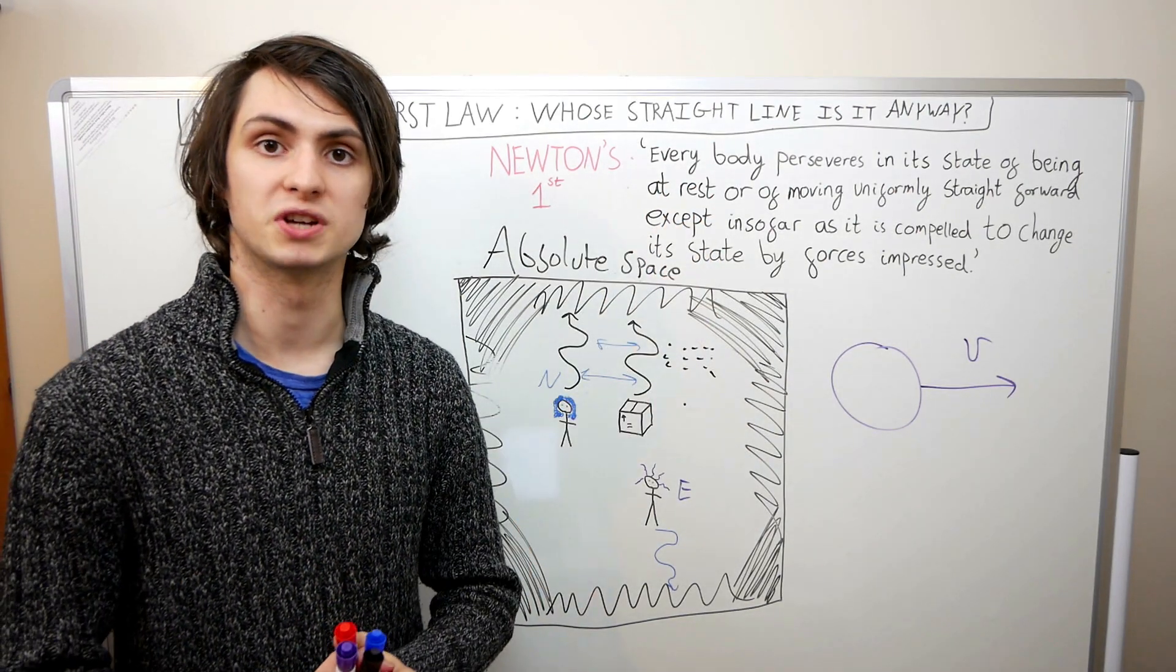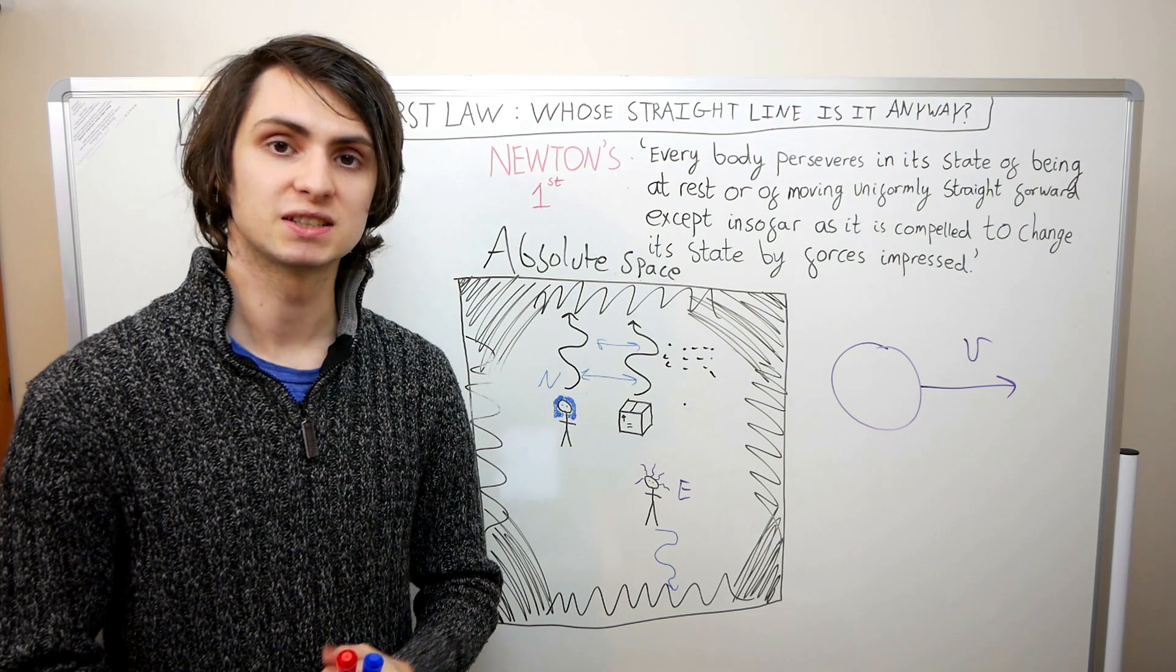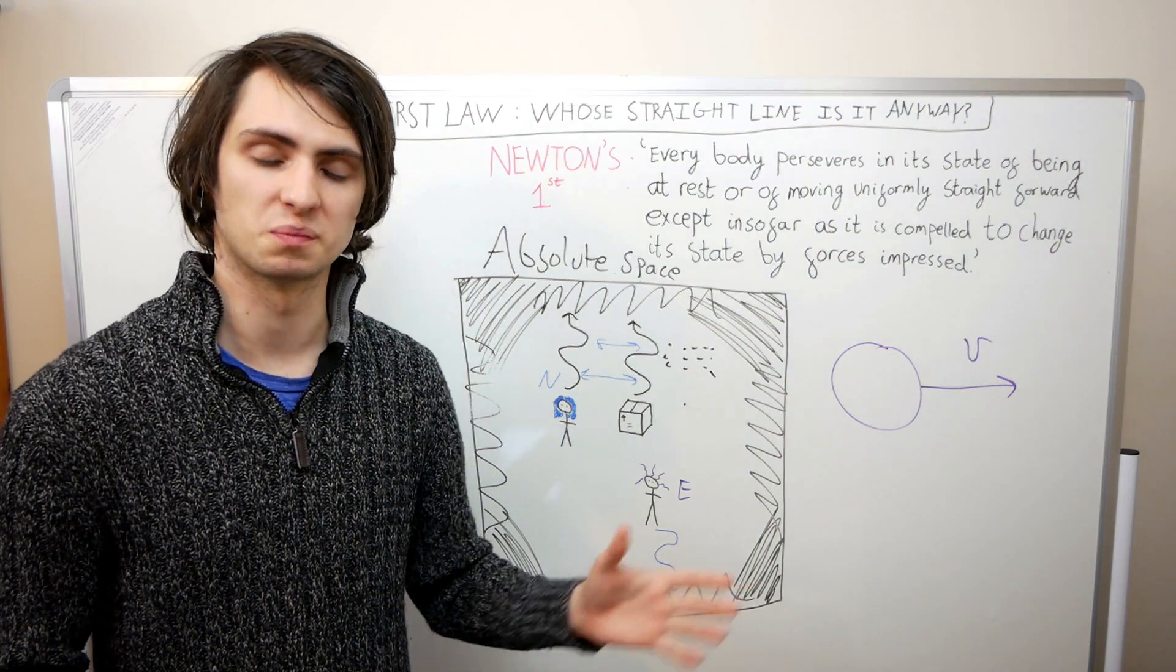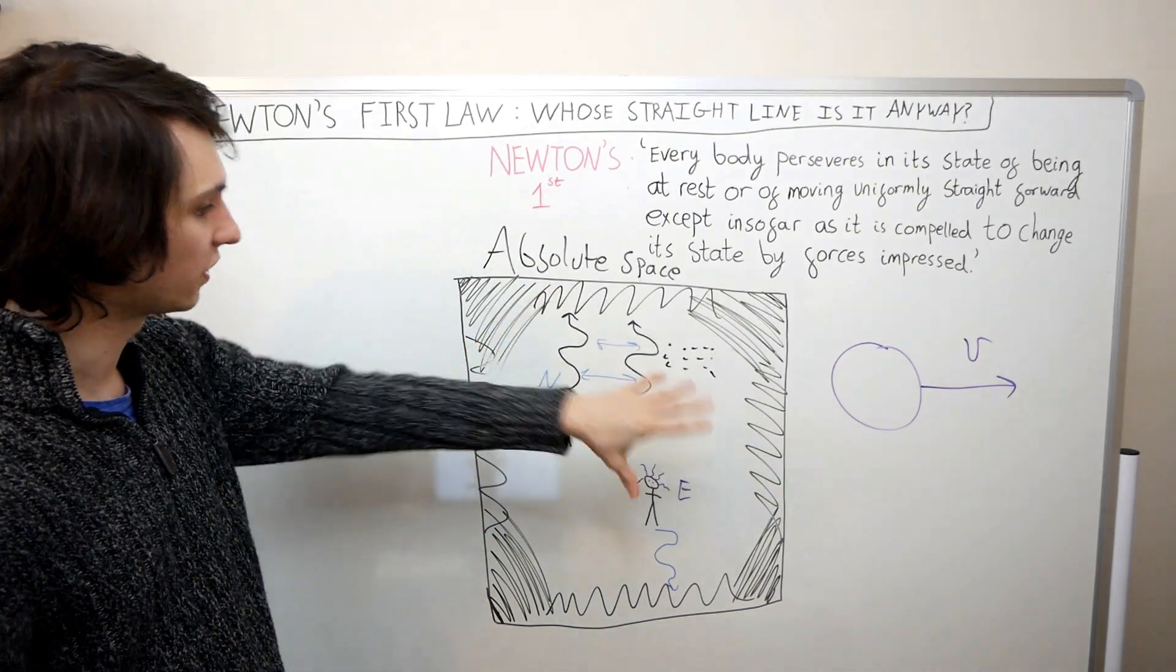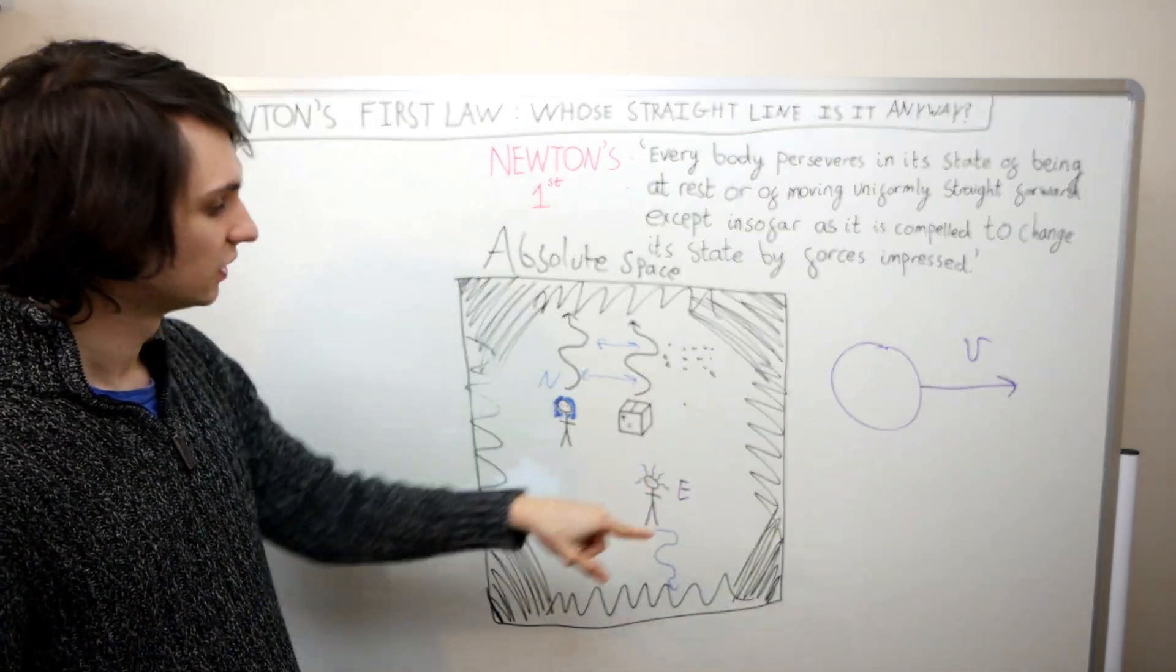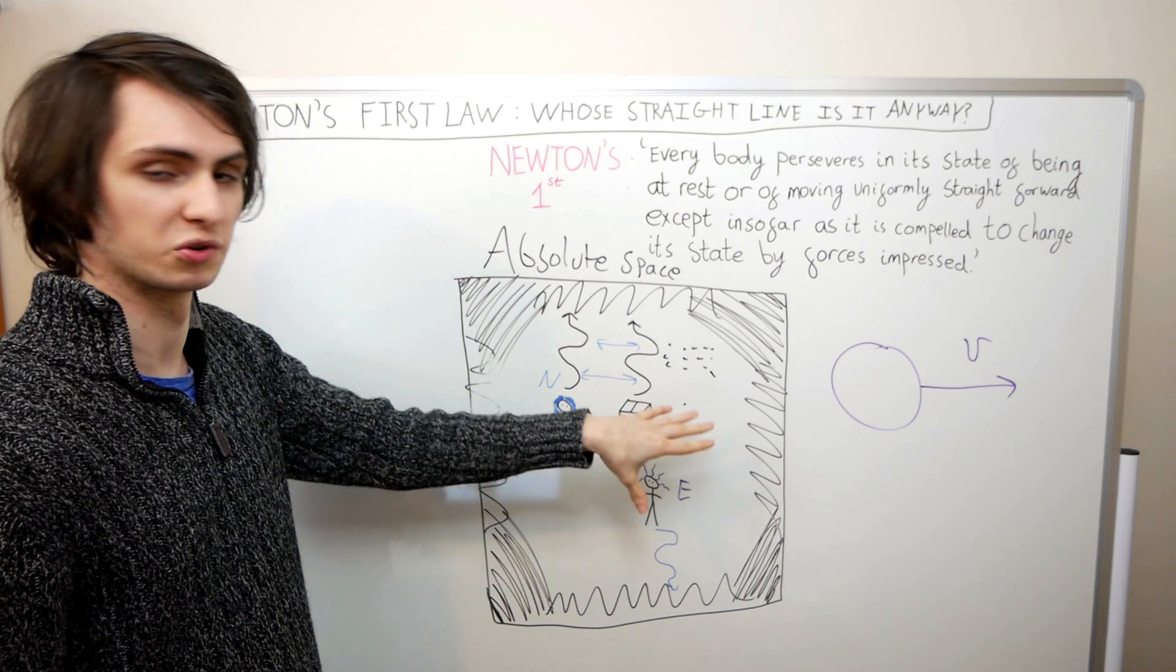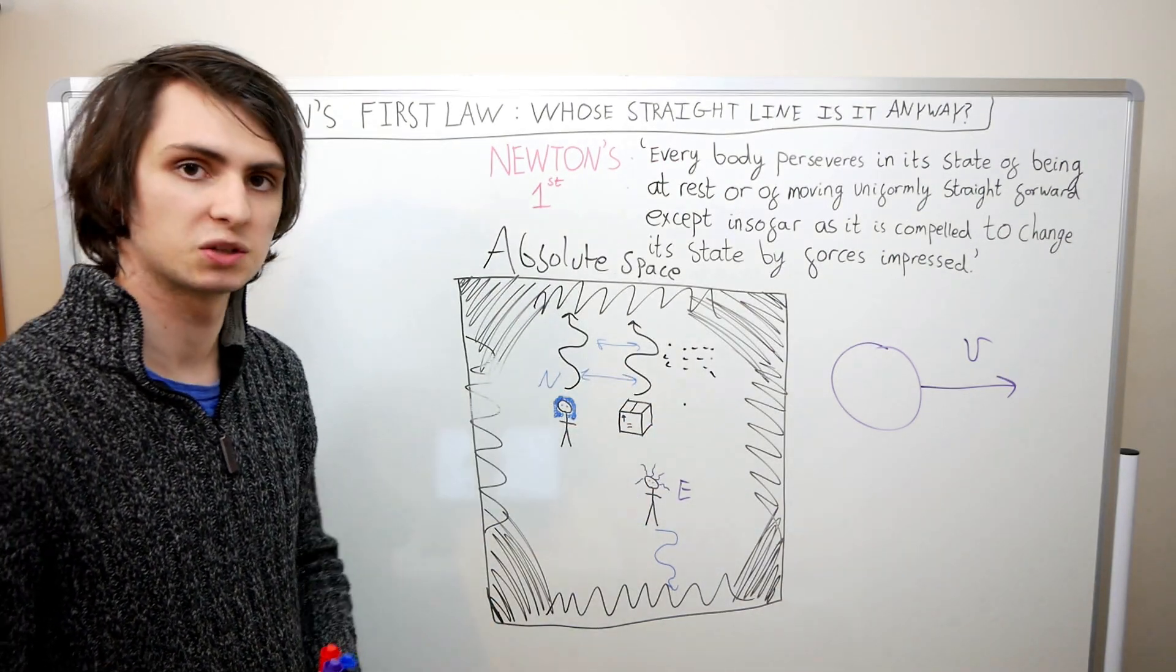Whether or not an object is really force-free depends on how it's moving with respect to the points of absolute space. If we look at our whiteboard drawing here, and take the whiteboard to be absolute space, well, Einstein is stationary with respect to the whiteboard, so he's not experiencing a force.